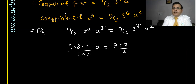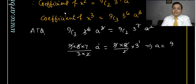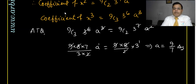Now 9C3 = (9×8×7)/(3×2) and 9C2 = (9×8)/2. After cancelling 9, 8, and 2, we get a = 3 × 3/7 = 9/7. So the value of a is 9/7.